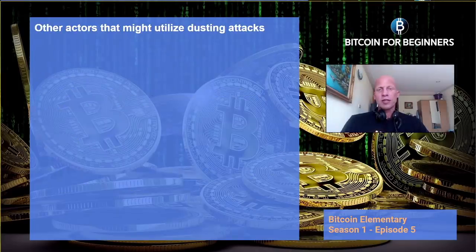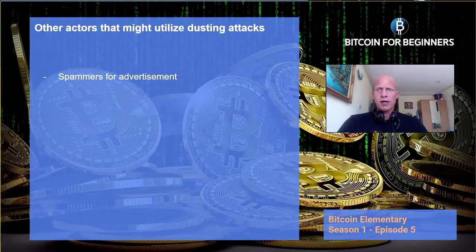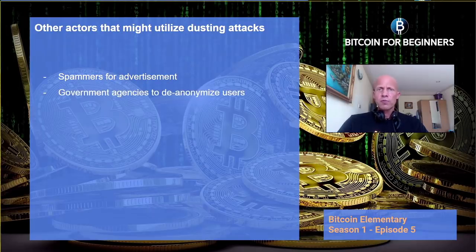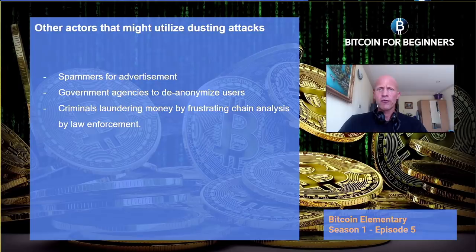Other actors that might utilize dusting attacks can be spammers, who use tiny dust transactions to send advertising messages. Though those spammers themselves might not be out to de-anonymize you, other bad actors can monitor the same dust as well. Government agencies can also dust to de-anonymize users. Furthermore, dust can be used by criminals to launder money — a portion of their illegally obtained cryptocurrency might be spread as dust over large amounts of random addresses to frustrate chain analysis tools used by law enforcement to follow dirty money.